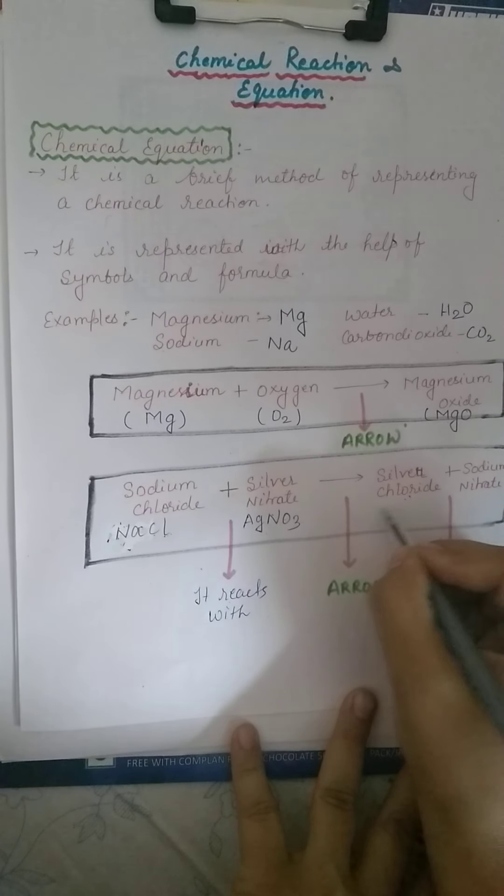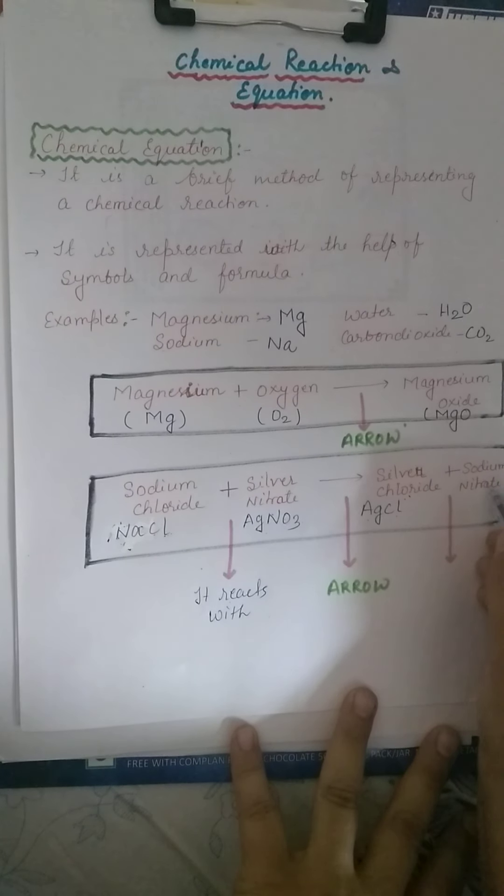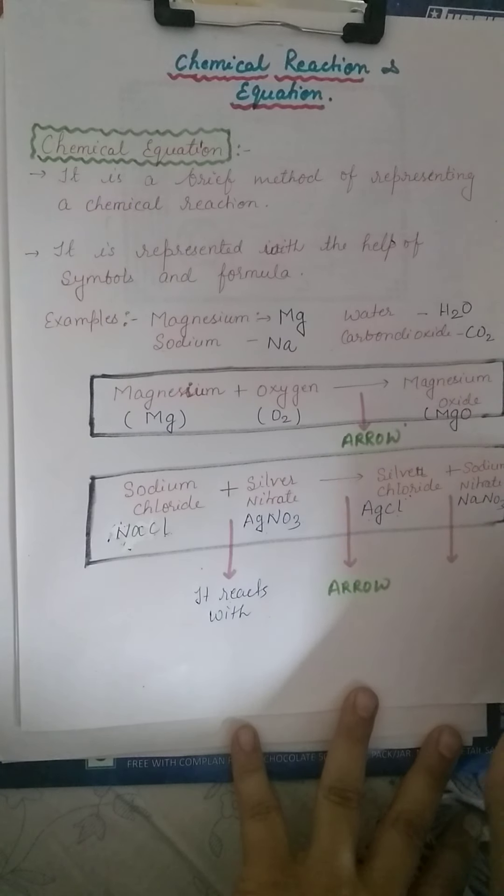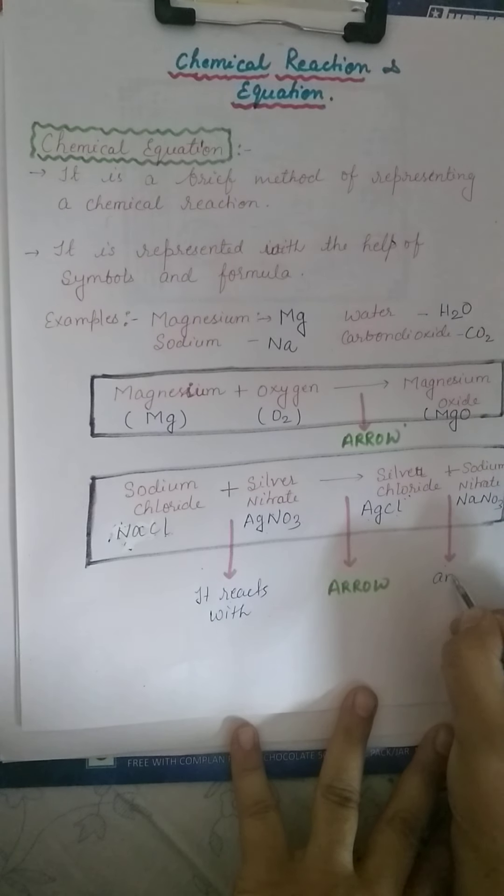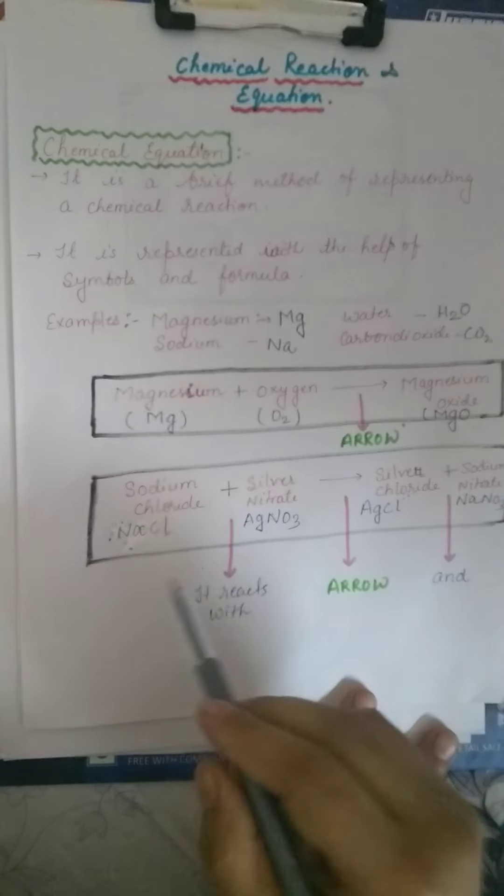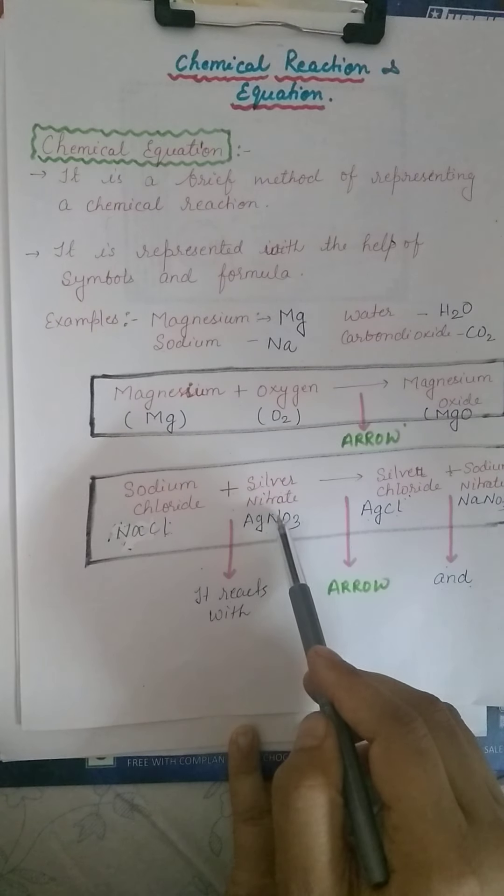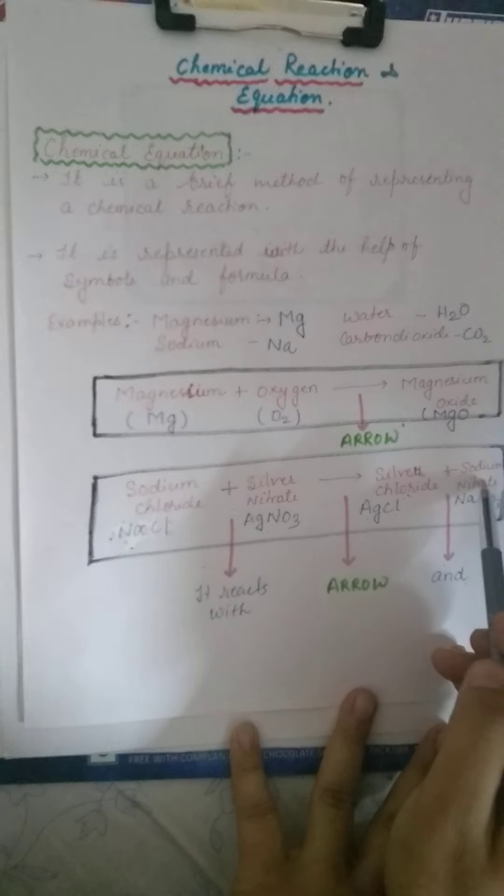Silver chloride, that is AgCl. Ag, silver chloride. Sodium nitrate - symbol for sodium Na and nitrate is NO3. The plus sign here indicates reaction. So what we have is: sodium chloride reacts with silver nitrate to produce silver chloride plus sodium nitrate.